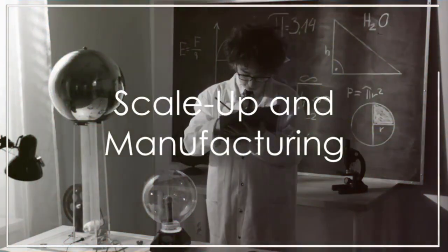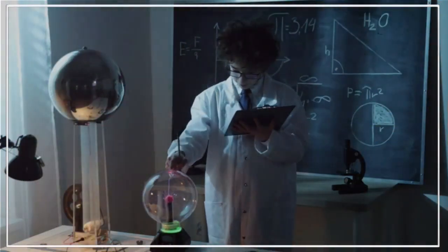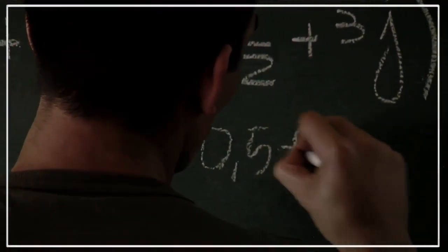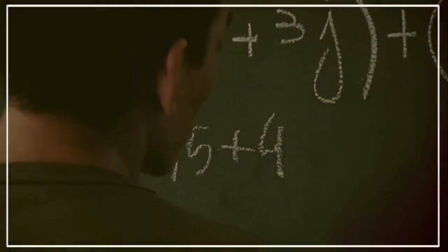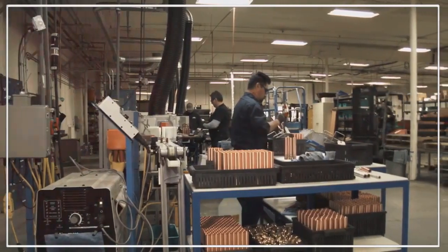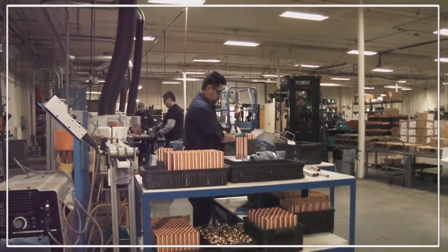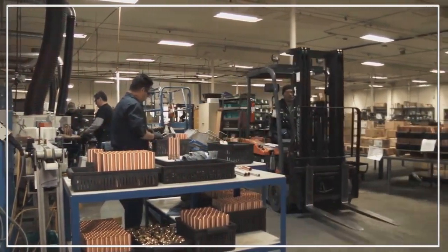Finally, in scale-up and manufacturing, we start with process optimization. This involves operations research, guided by linear programming and constraint optimization. The methodology here is to optimize manufacturing processes, considering constraints, costs, and efficiency.